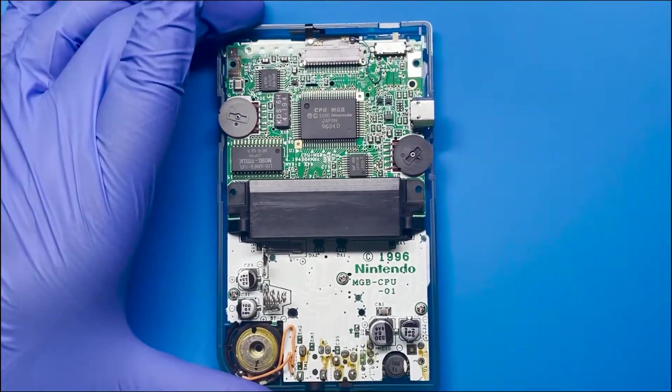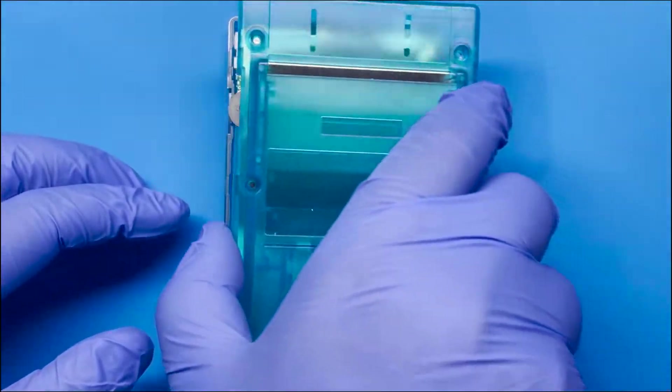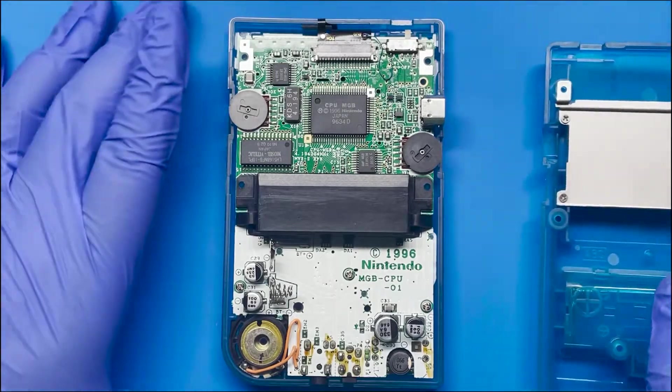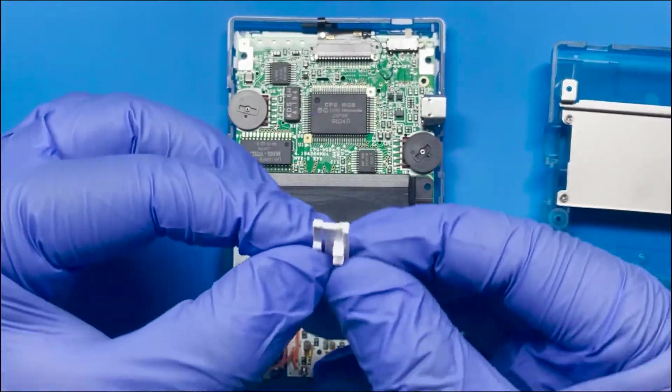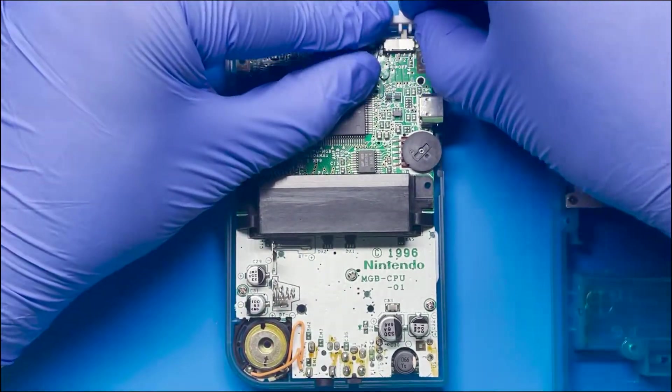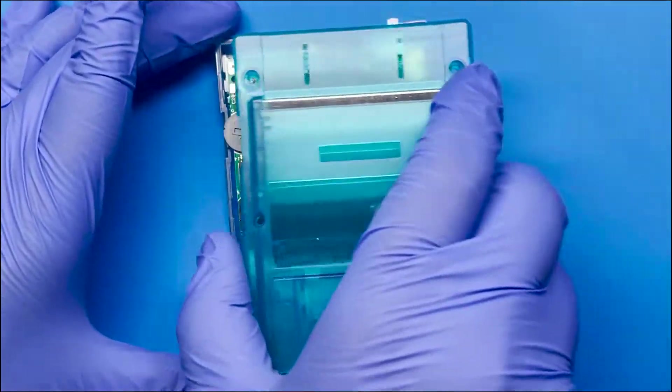So once that's completed, we can go ahead and just attach the back casing and we should be able to screw this in and we're done. Oh, but before we do, don't forget the power switch just like I almost did. So there we go. Now we can close it.